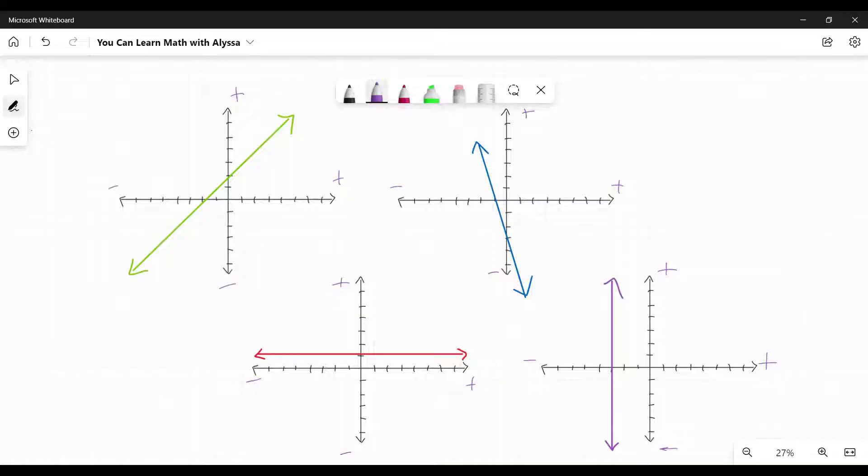First example here, the positive one. If I start at a point and move to another point on the line, I can go up two, positive two, and to the right two, towards the positive two. So rise over run would be two over two, which divides to a positive one. This is a positive slope.